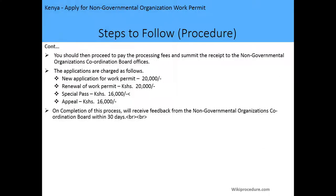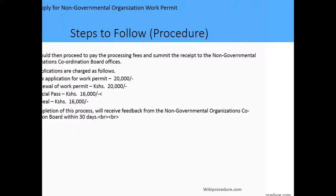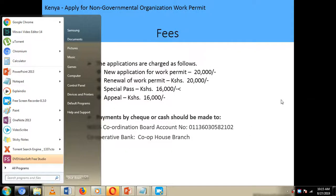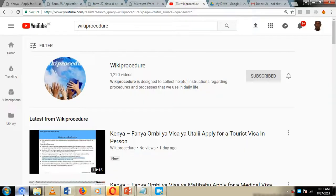After assembling all documents, you should proceed to pay the processing fees and submit the receipt to the NGO coordination board offices. The application fees are as follows: for a new application for work permit — 20,000 Kenyan shillings; for renewal — 20,000; for a special pass — 16,000; and for an appeal — 16,000. After completion of this process, you will receive feedback from the NGO coordination board within 30 days.